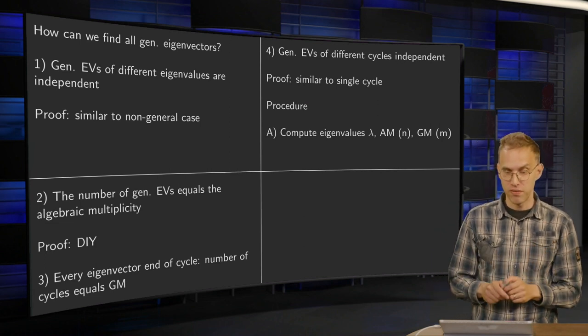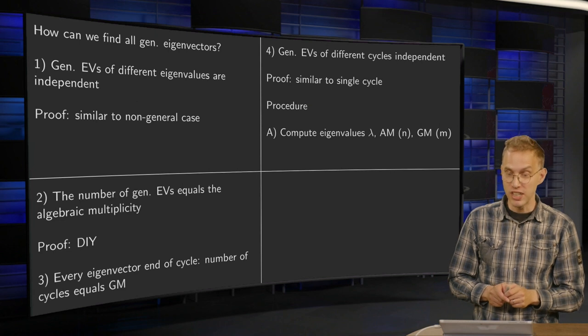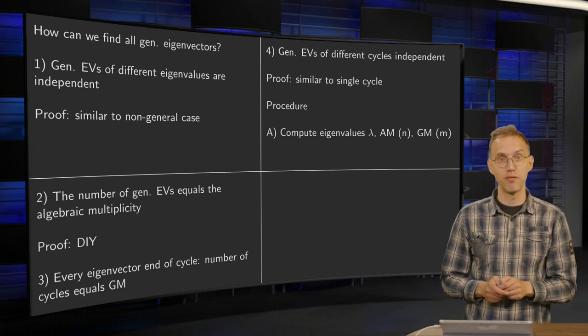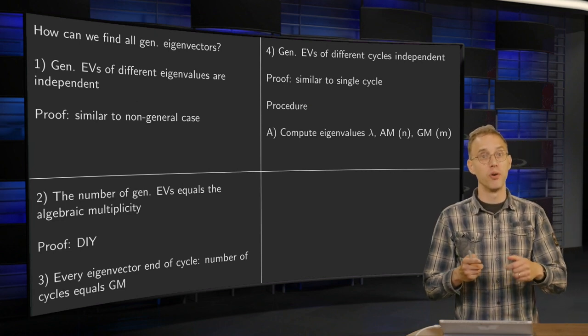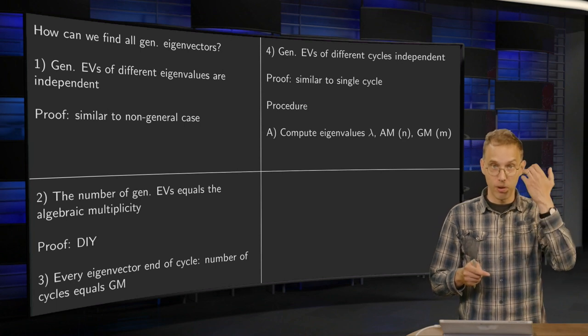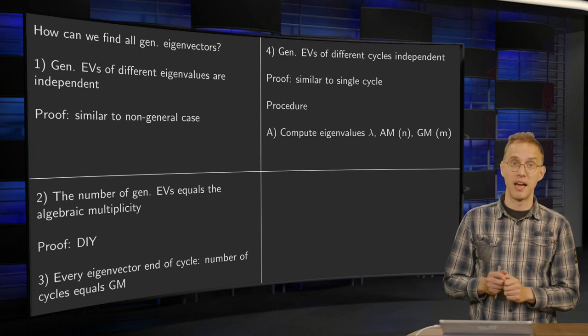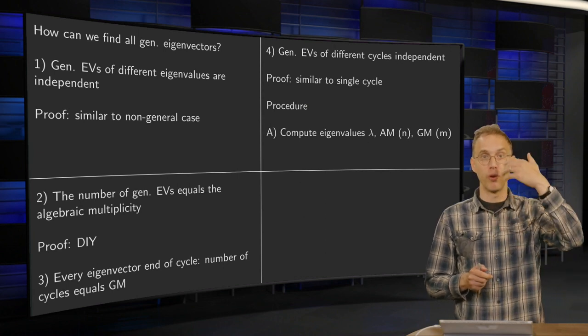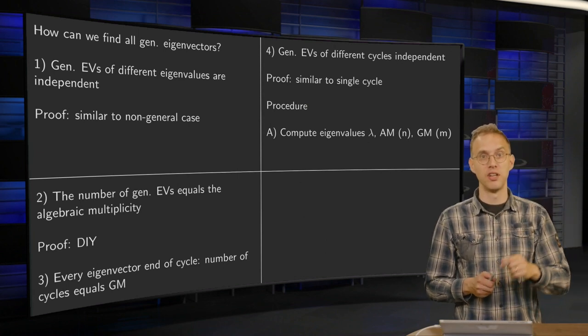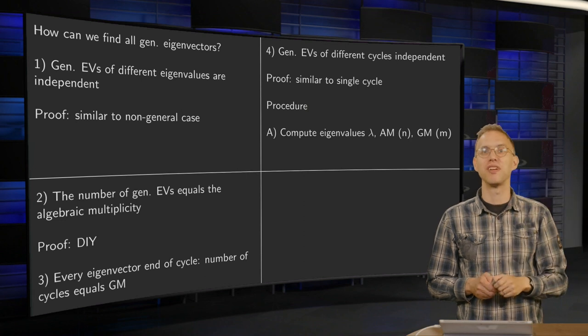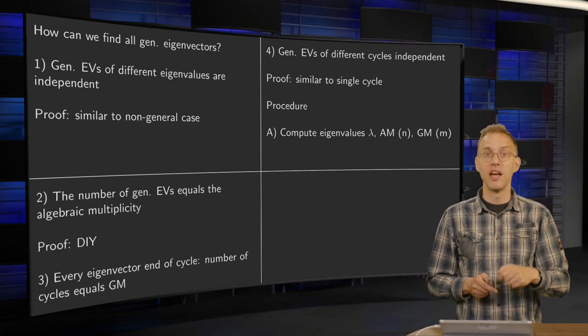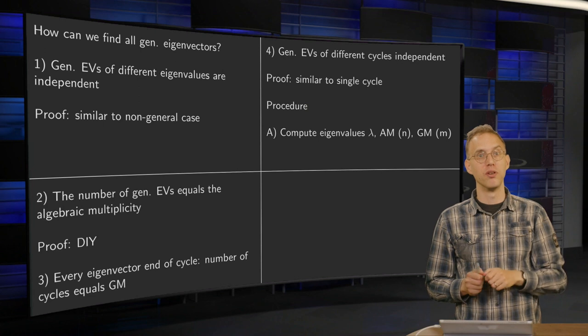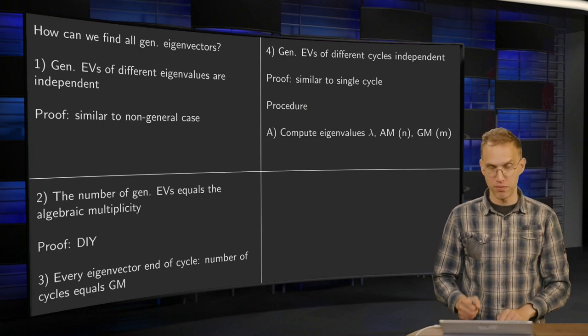Proof, by the way, is very similar to the proof for a single cycle, which we did already before. So now we know we can work on a per-eigenvalue basis, and we can also work on a per-cycle basis, because the cycles do not interfere with each other. And we know the endpoint. We know the number of cycles. We know the endpoints of all cycles.